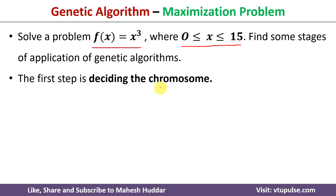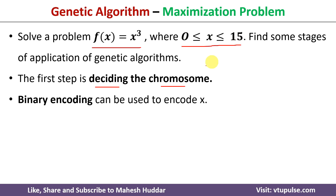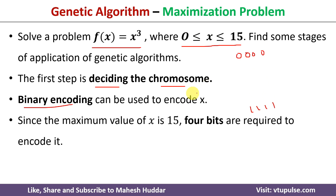The first step in genetic algorithm is to decide the encoding technique for the chromosome. In this case, the value of x will be in the range of 0 to 15 — minimum is 0, maximum is 15. So we can use binary encoding to represent x. The minimum value 0 can be represented with four zeros, and the maximum value 15 can be represented with four ones, with different encodings in between.